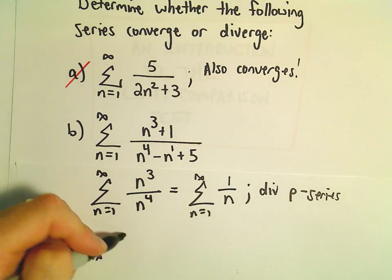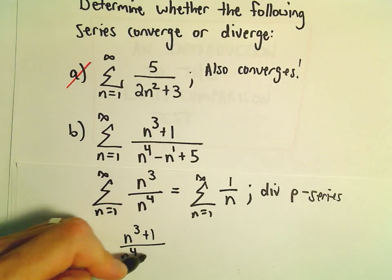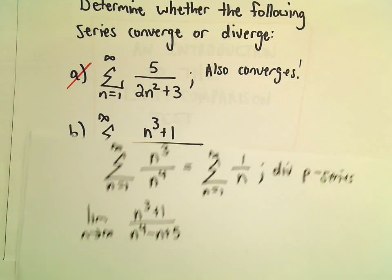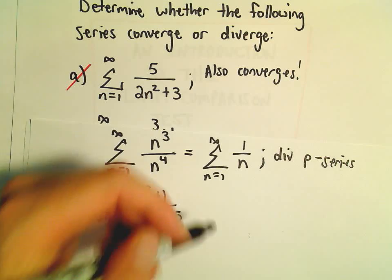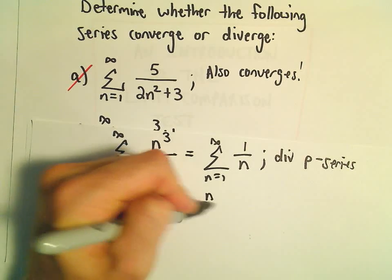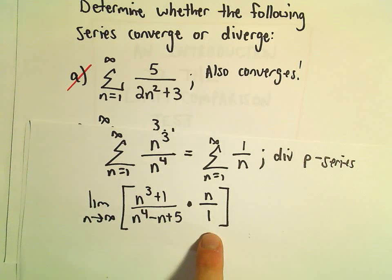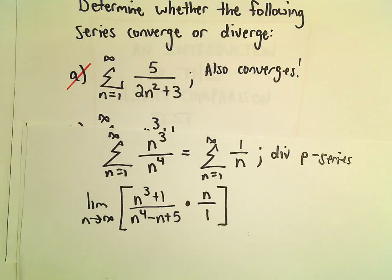We'll take the limit as n goes to infinity. n to the 3rd plus 1 over n to the 4th minus n plus 5. Okay, so we divide it by 1 over n. But dividing by 1 over n is the same thing as multiplying by n over 1. So I usually never write the division step. I just jump to the multiplication because that's what we're going to have to do anyway.